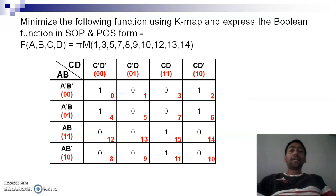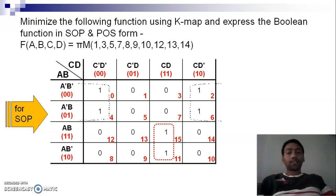So if we have to find SOP expression for the given K-map, we need to do pairing of ones. One pair can be these two, and one pair can be these four ones. So the possible pairing can be of four ones.